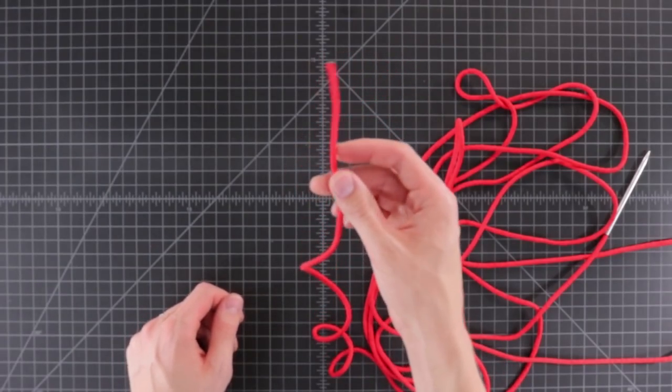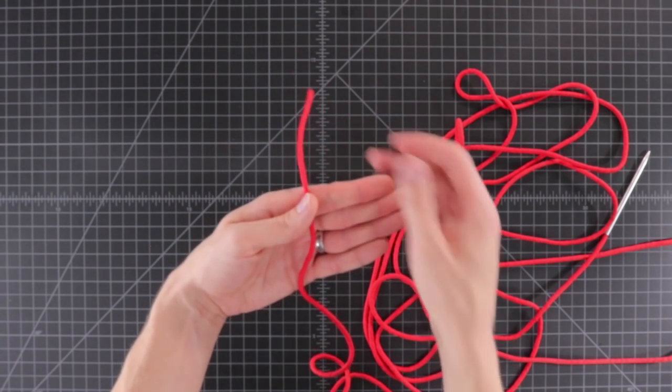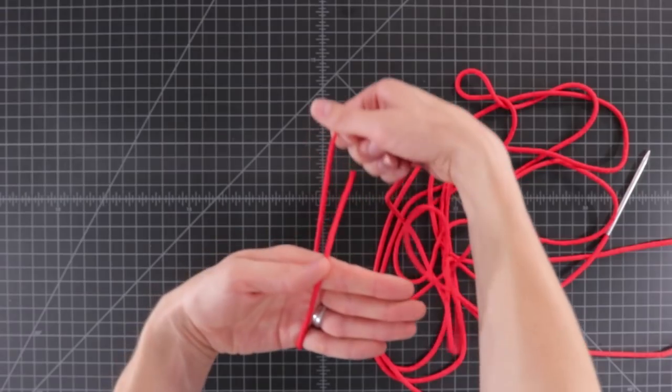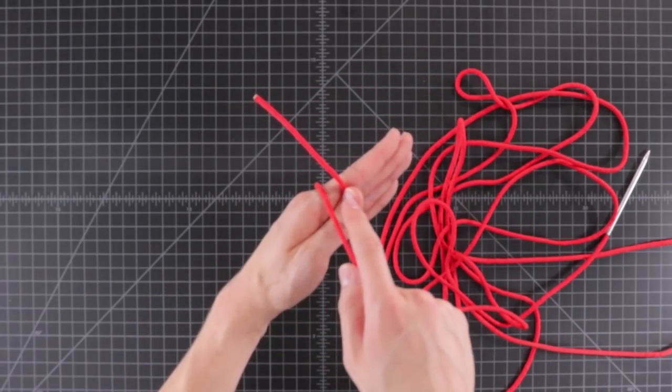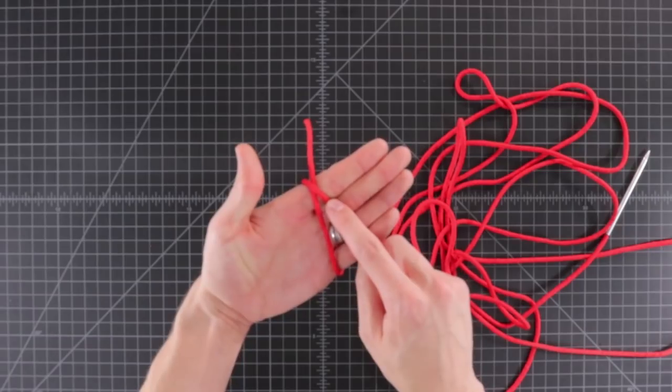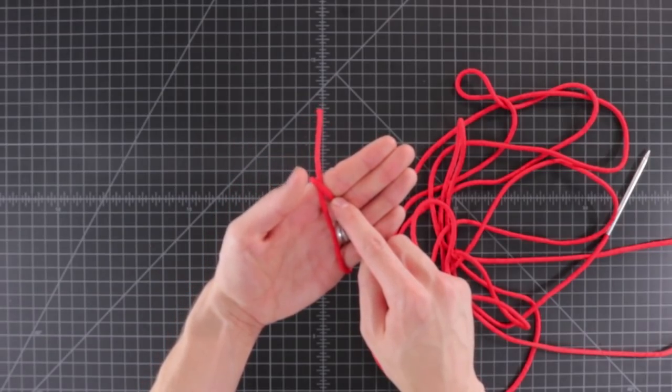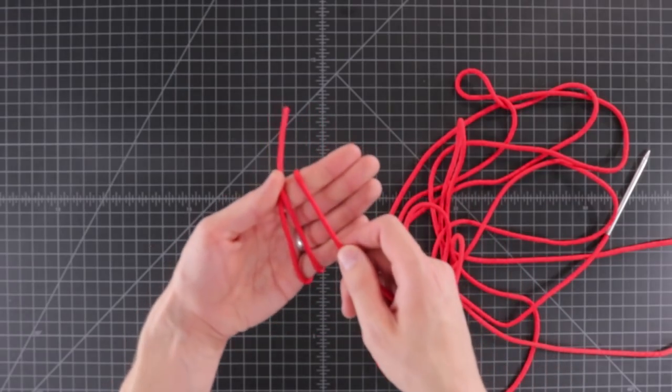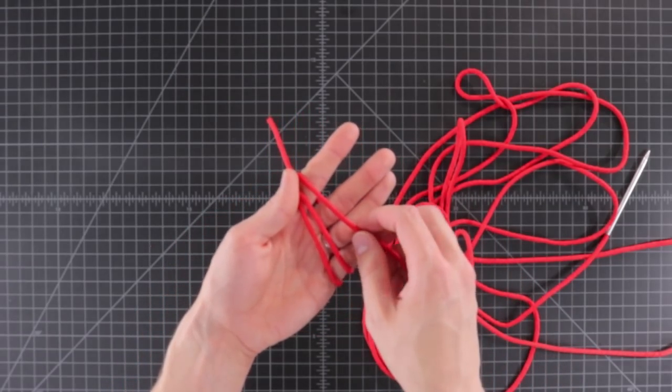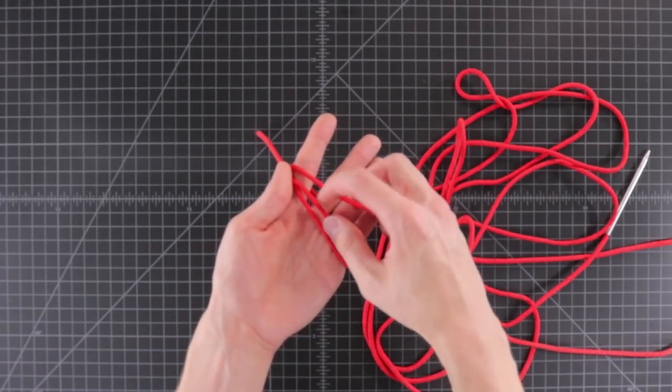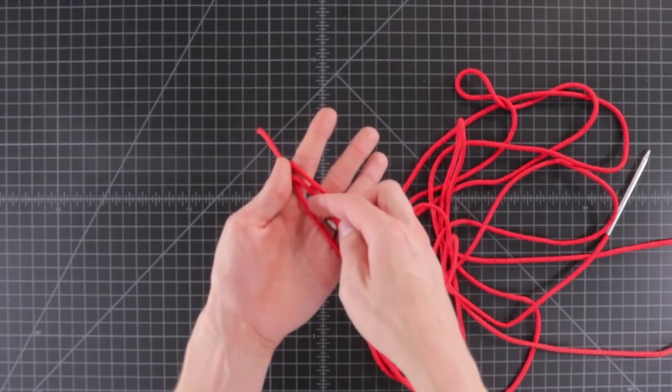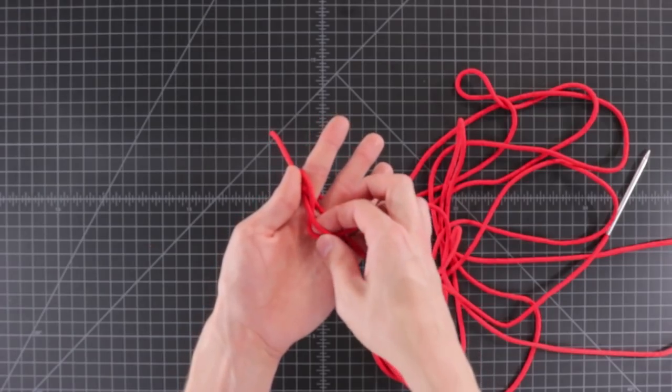Start by taking one end of your paracord and laying it across your palm with the end pointing up. Then we're gonna wrap it around the back and on the left side and cross it back over to the right. So you have a meeting point right there that you can hold in place with your thumb. Then once more around on the right side. Then we're gonna go through the middle of these two cords. It's gonna be over the first one and under the second one.